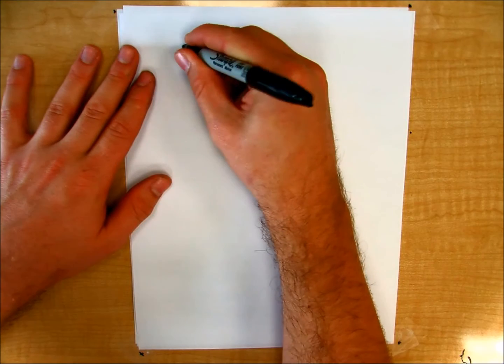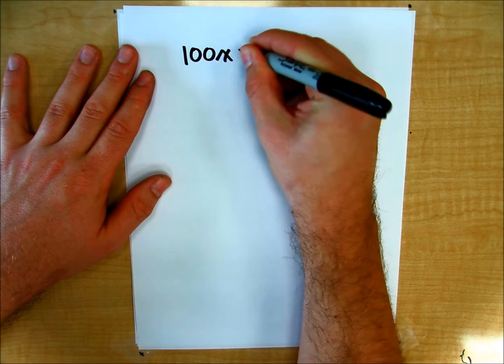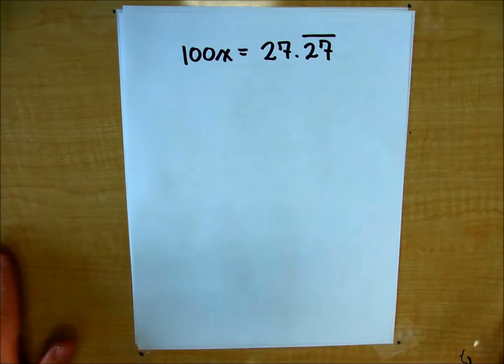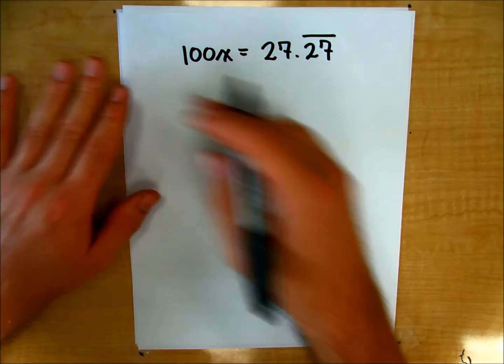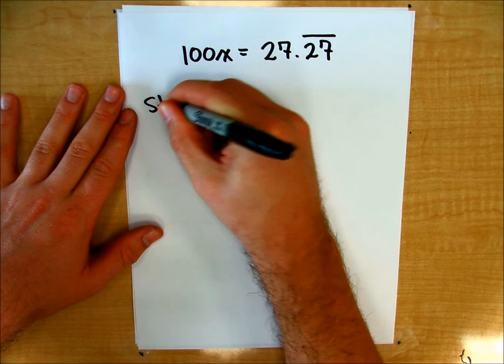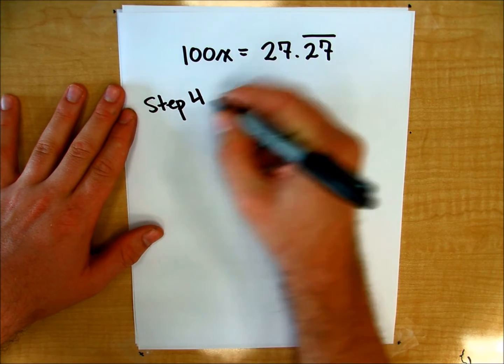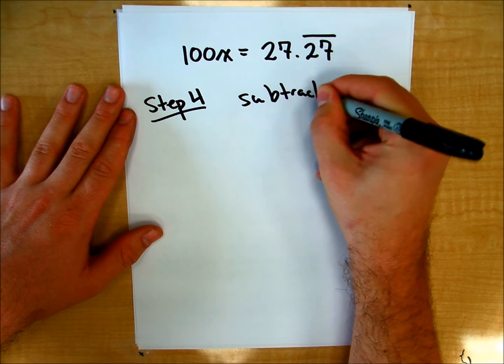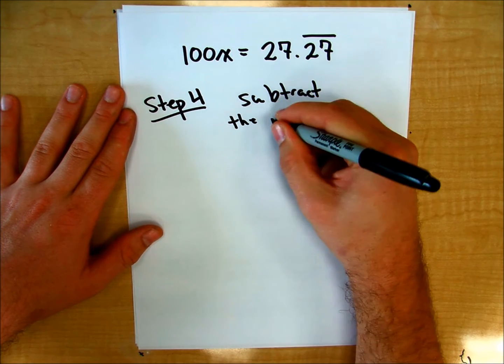All right, so now we have our 100x is equal to 27.27 repeating. Okay? So again, we multiplied both sides by 100. And now, step four: we're going to subtract the repeating part.